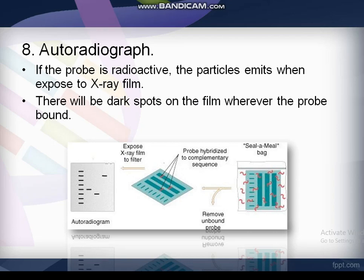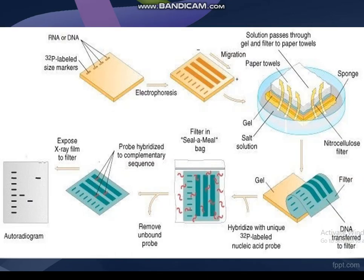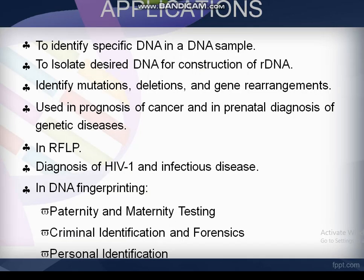There will be dark spots on the film wherever the probe bound. As you can see in this diagram, in the end there are dark spots shown. This is the whole diagram that was explained about the southern blotting technique.